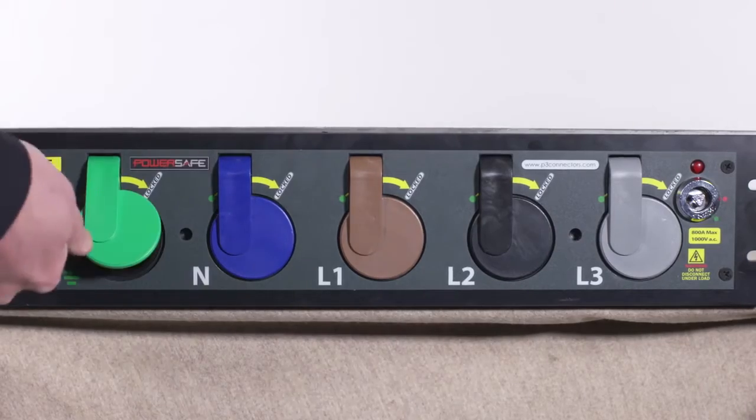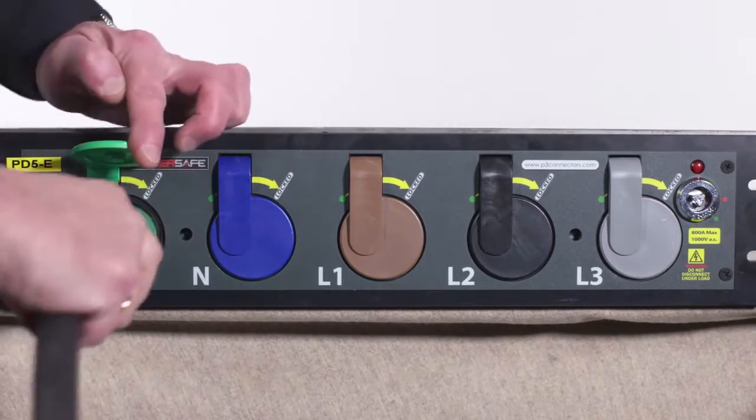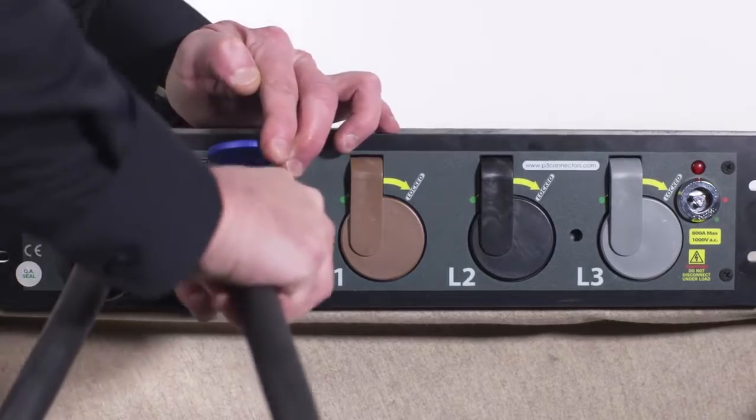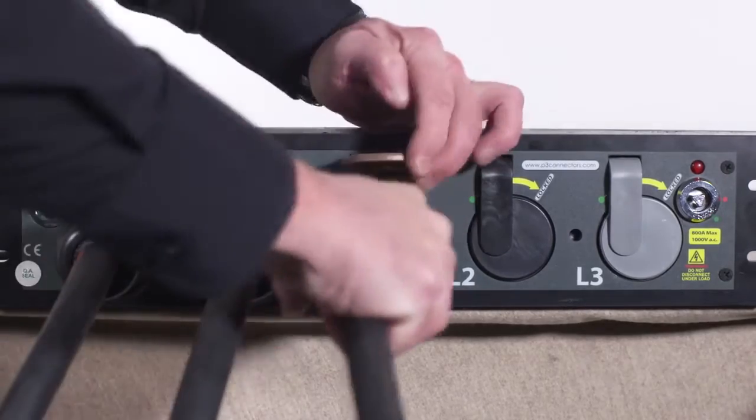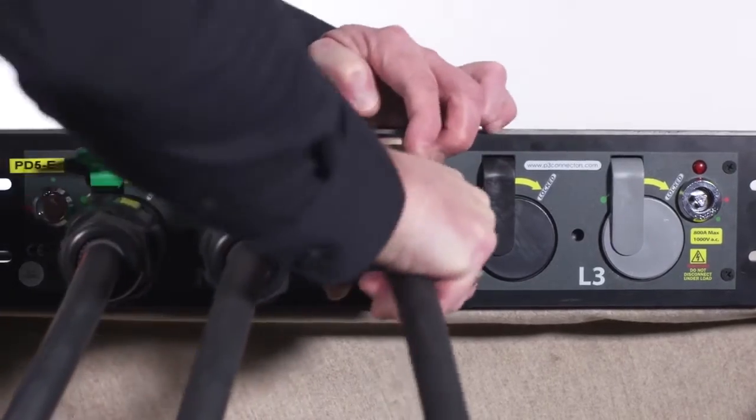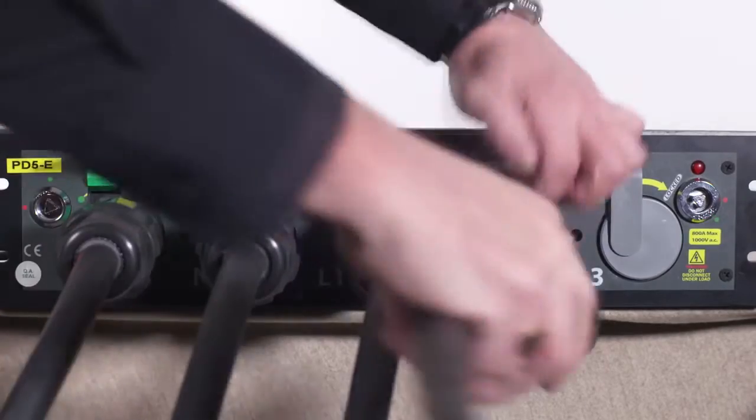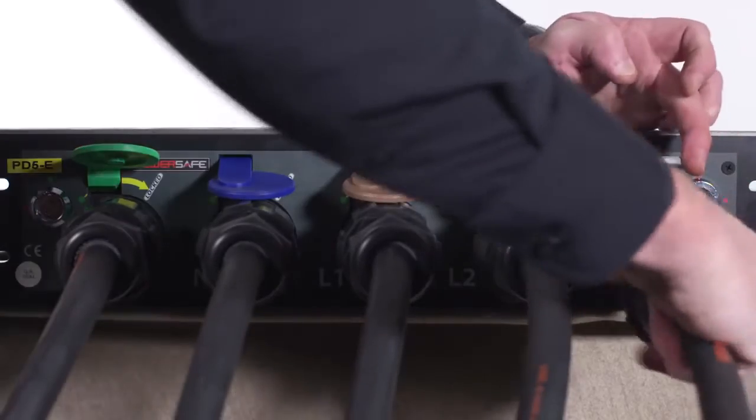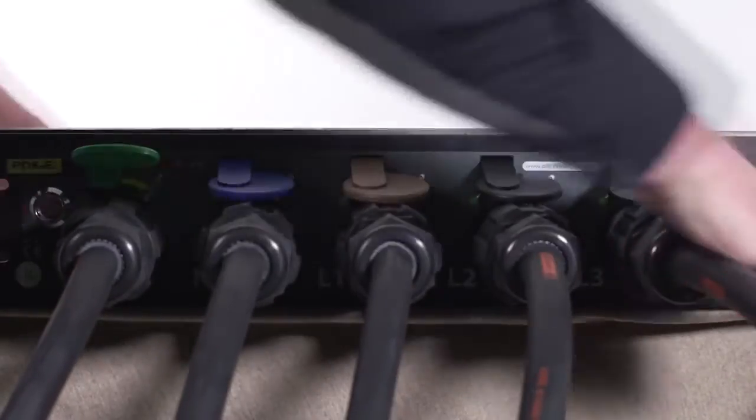PowerSafe connectors can be used with our sequential mating units. These units assist with the safe and controlled connection of the single core power cables by controlling the sequence of connection to ensure earth and neutral connections are made before phase connections can be made, thereby improving safety by eliminating connection errors and ensuring safety circuits are always connected.